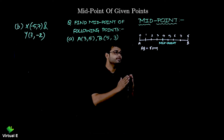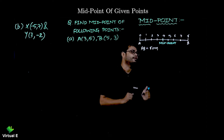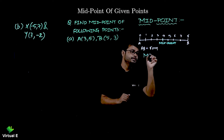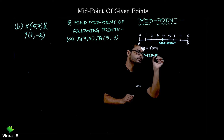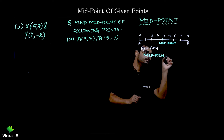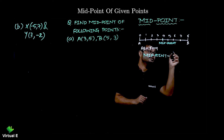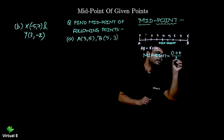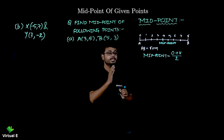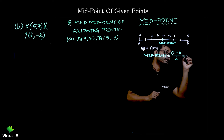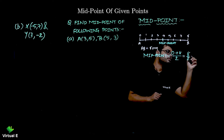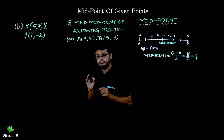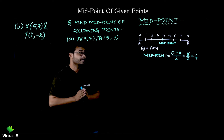Let's use a slightly more sophisticated method. To find the midpoint, I'm going to add zero and eight and divide by two: zero plus eight divided by two gives eight by two, so the midpoint is four.